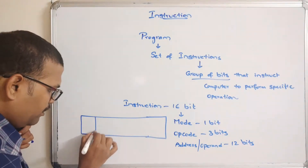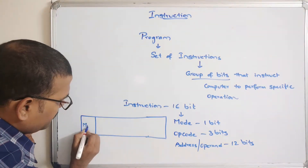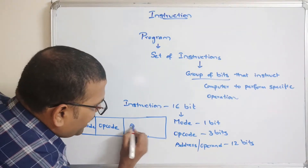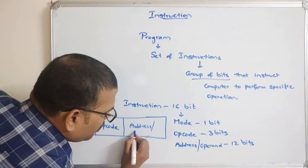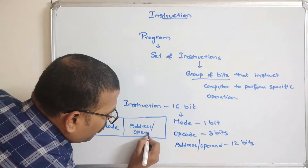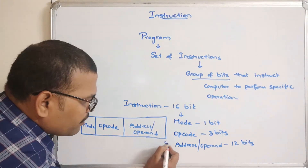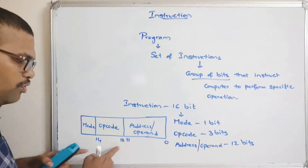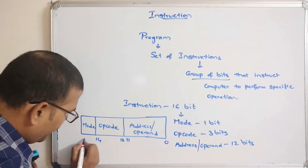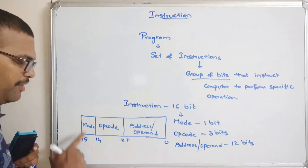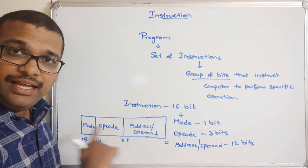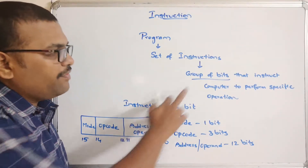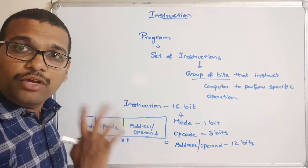The instruction format is laid out as follows: mode occupies bit 15 (1 bit), opcode occupies bits 12 to 14 (3 bits), and address or operand occupies bits 0 to 11 (12 bits). This instruction will be represented with a group of bits, where each bit is either a 0 or 1.